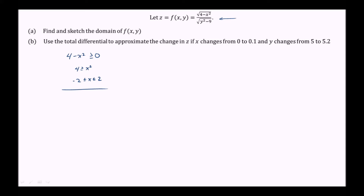Similarly, but slightly different, we know that the quantity y squared minus 9 is strictly greater than 0 — not greater than or equal to 0 — because the square root of y squared minus 9 can't equal 0 either, as that would make the fraction undefined. The numerator can equal 0, because that makes the whole fraction 0, but the denominator cannot equal 0, because that produces an undefined result. Therefore y squared minus 9 is strictly greater than 0, so y squared is greater than 9, meaning y is less than negative 3 or greater than 3.